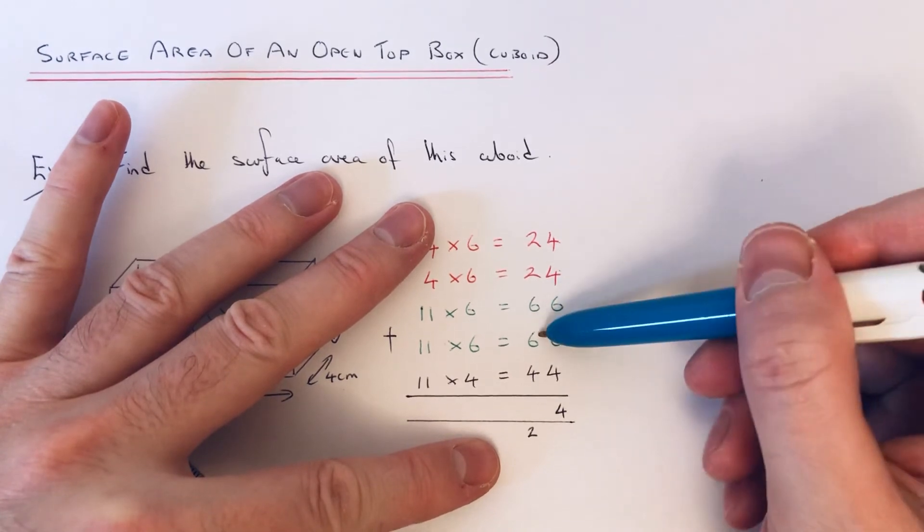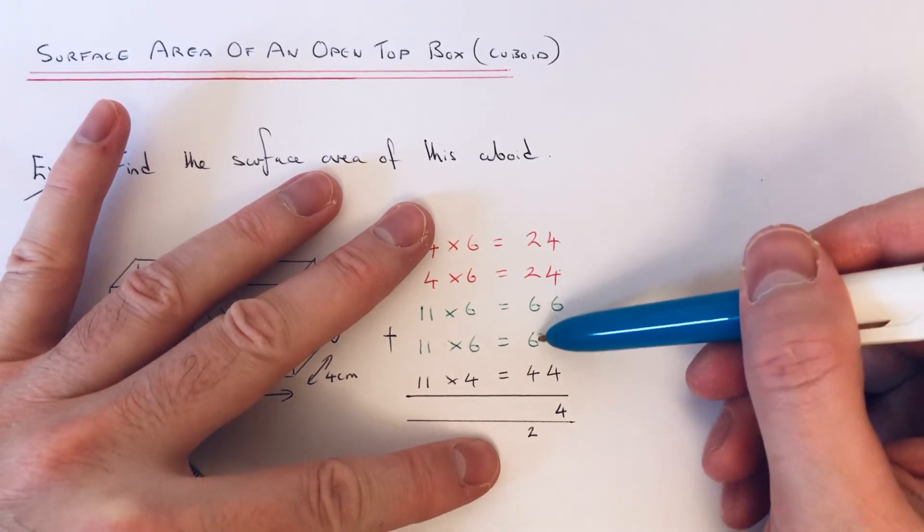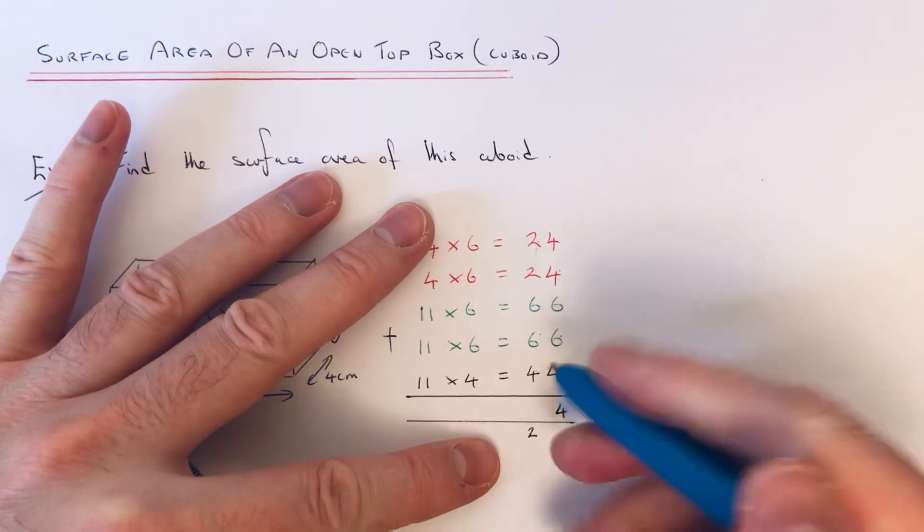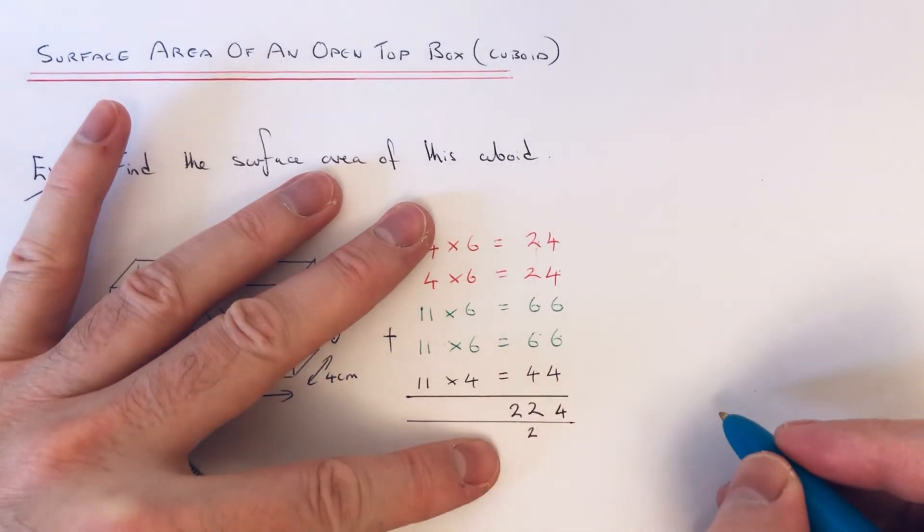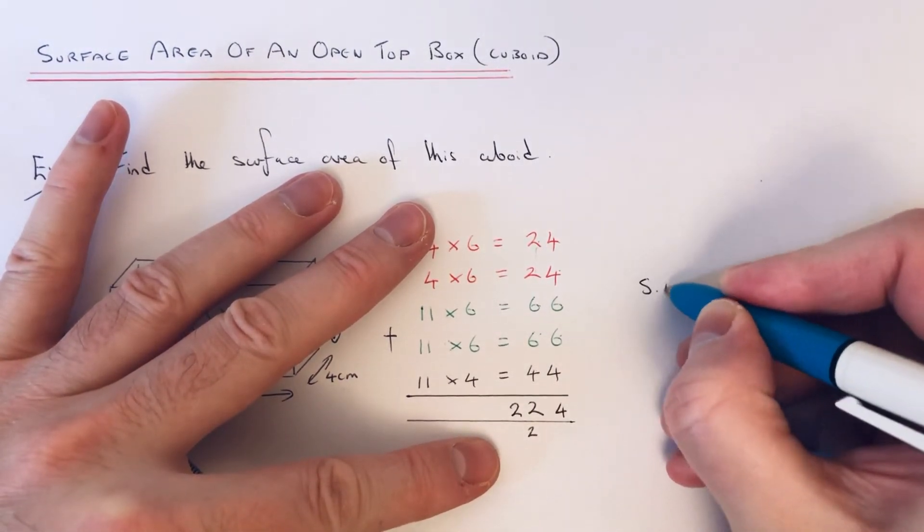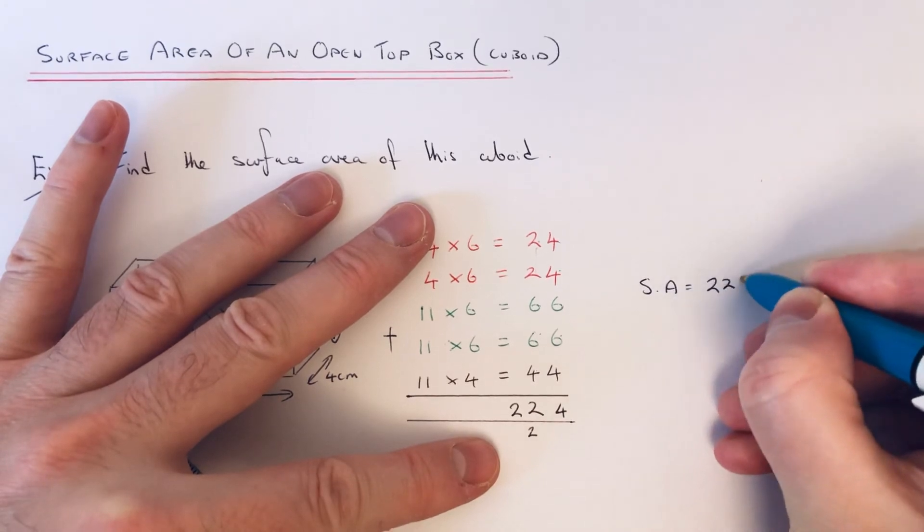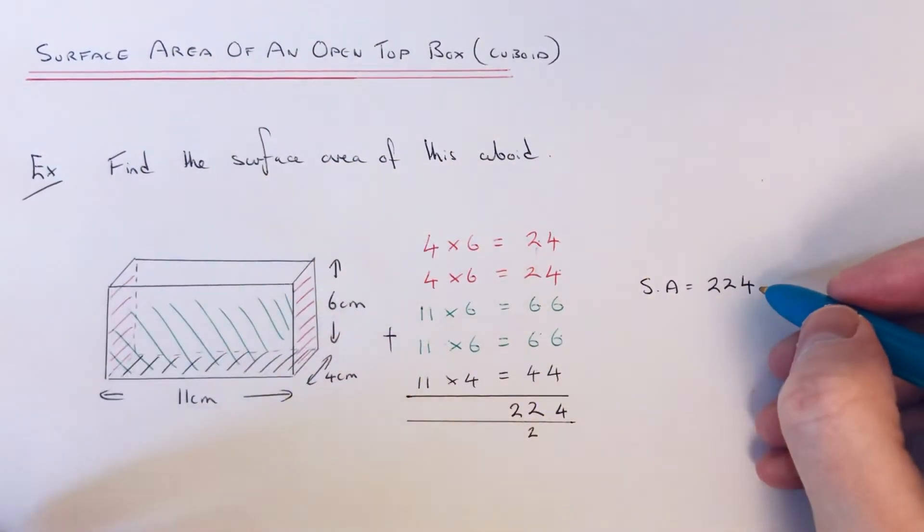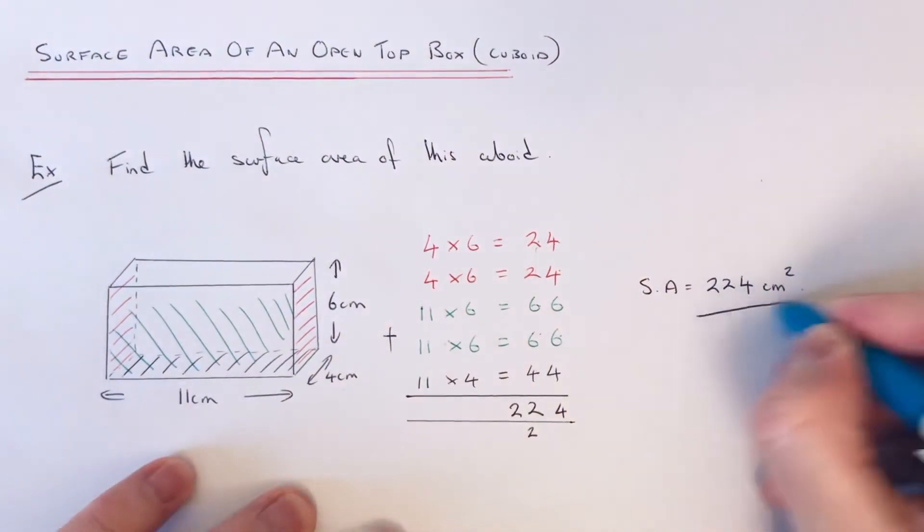6, 12, 16, 20, 22. So our final answer is 224, and the units are centimeters squared because it's an area question.